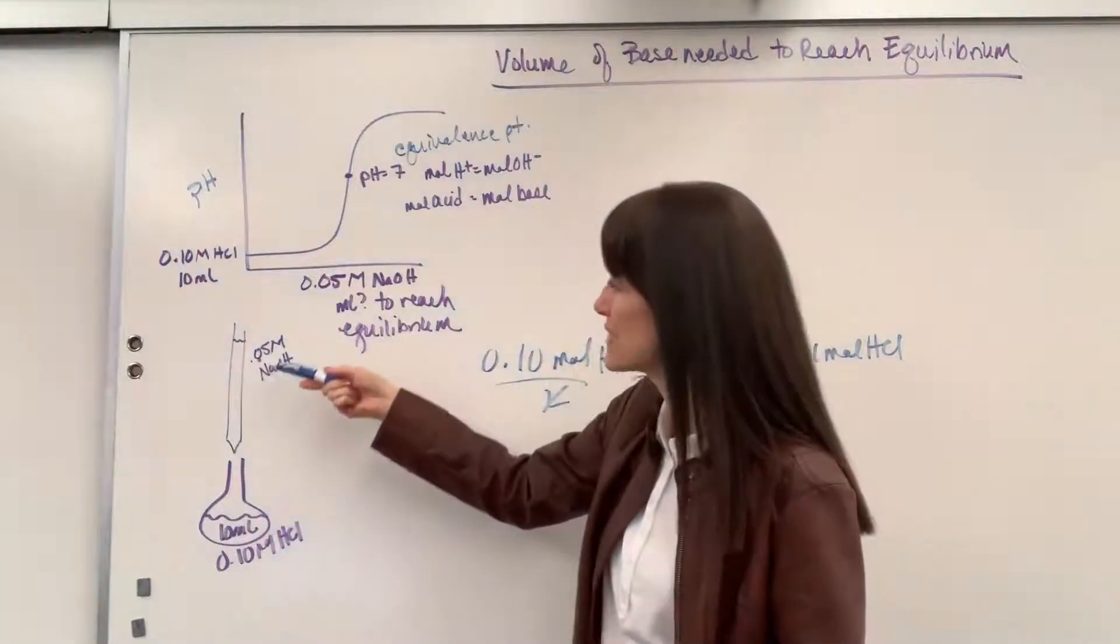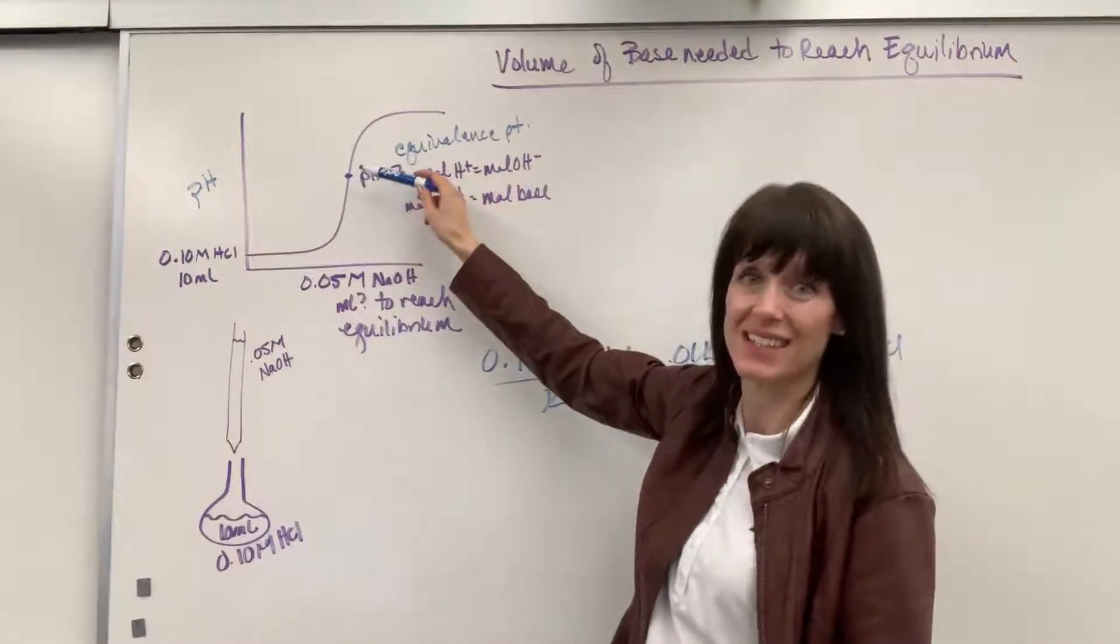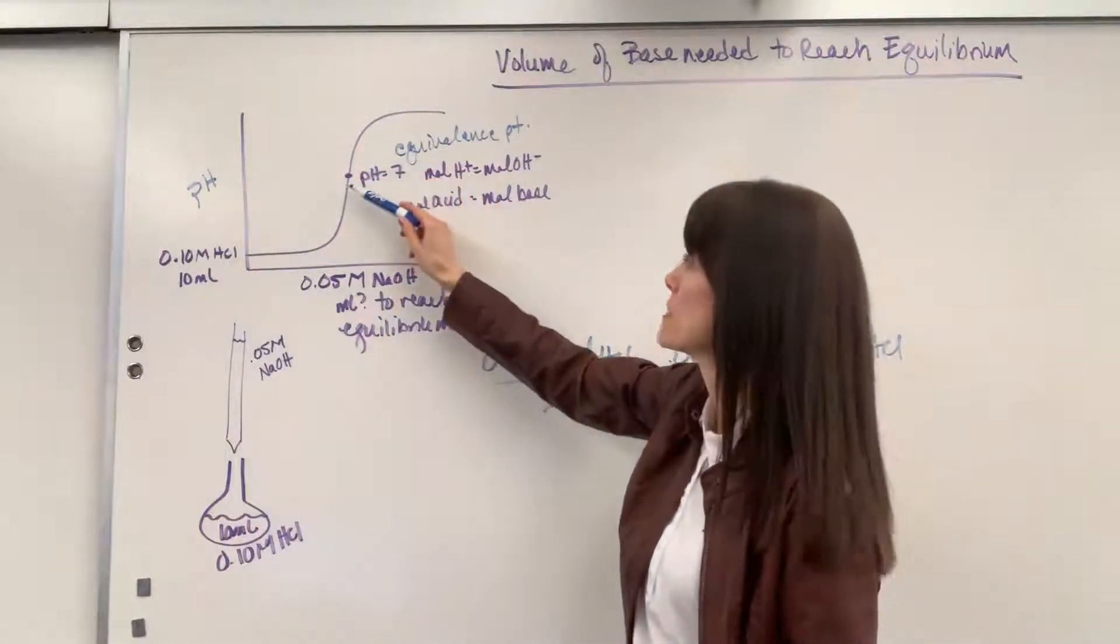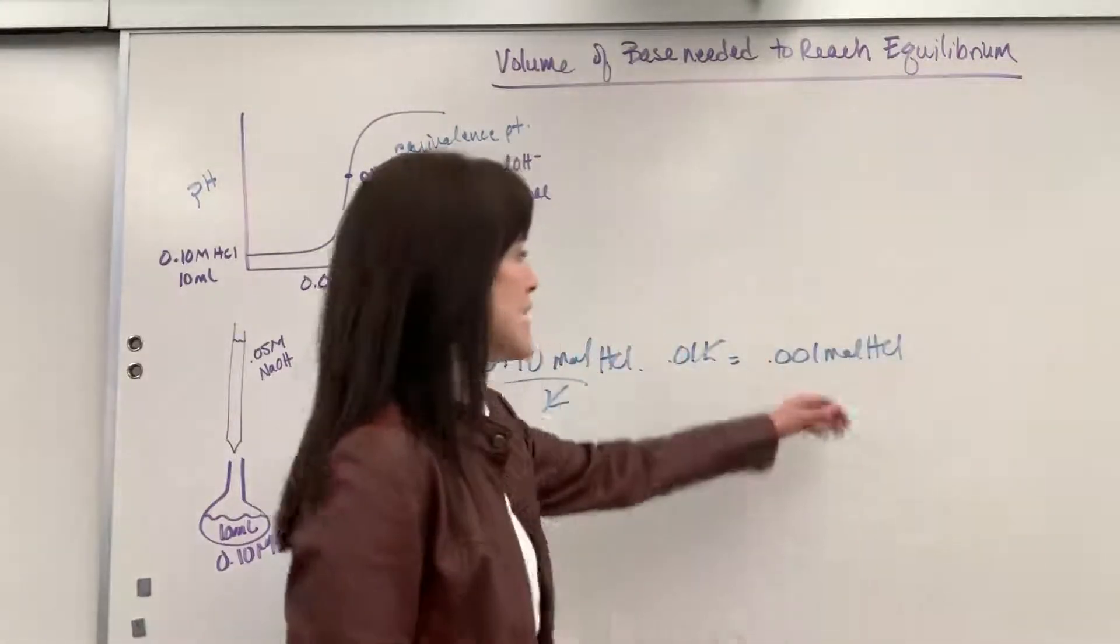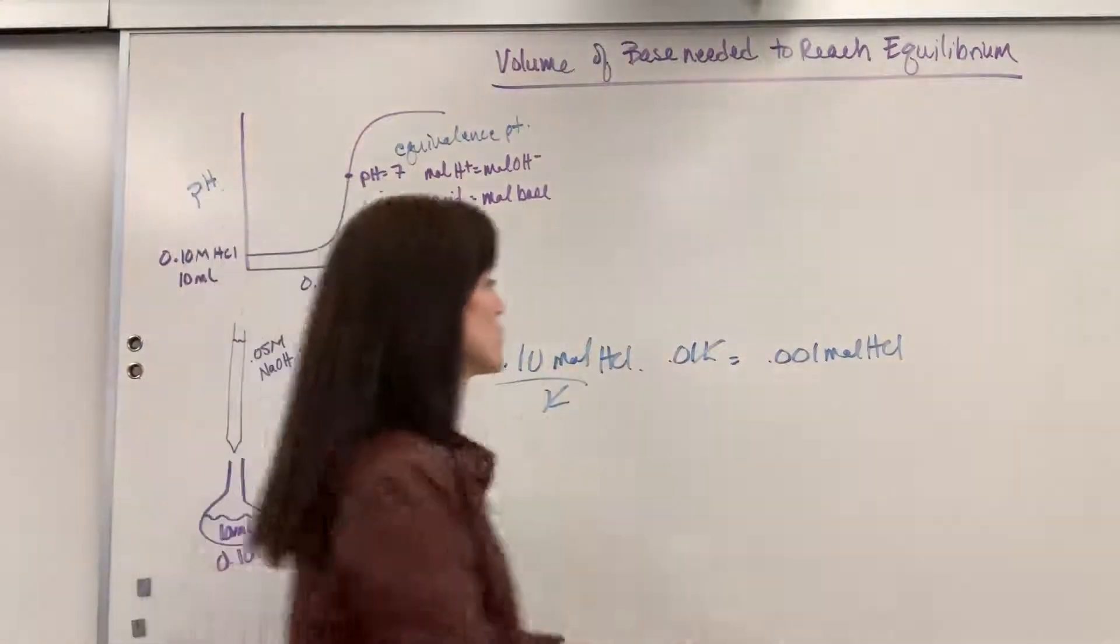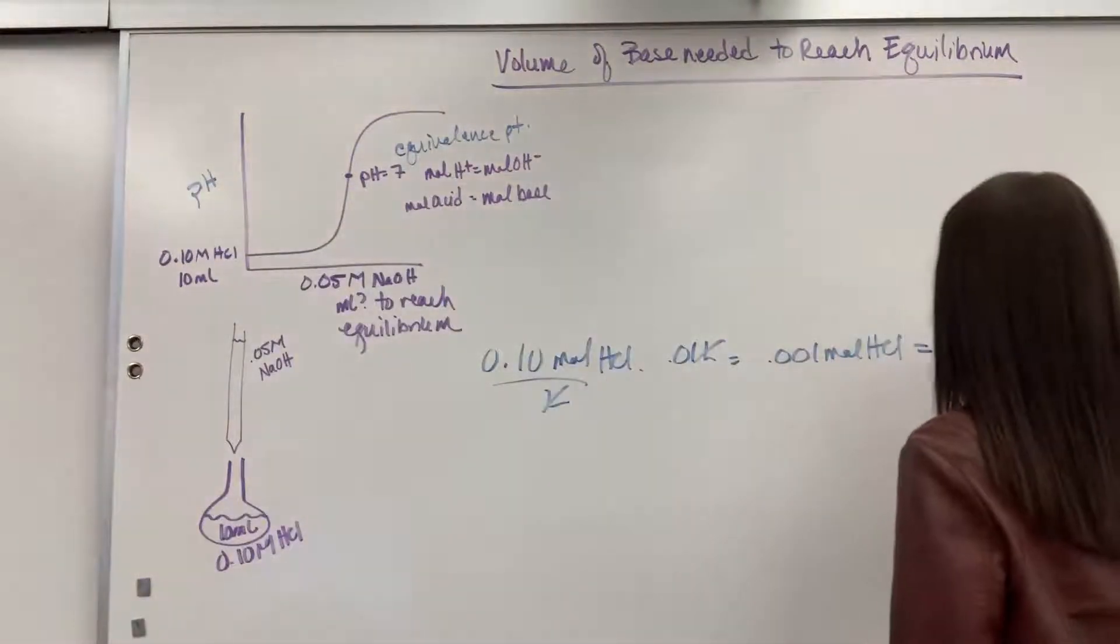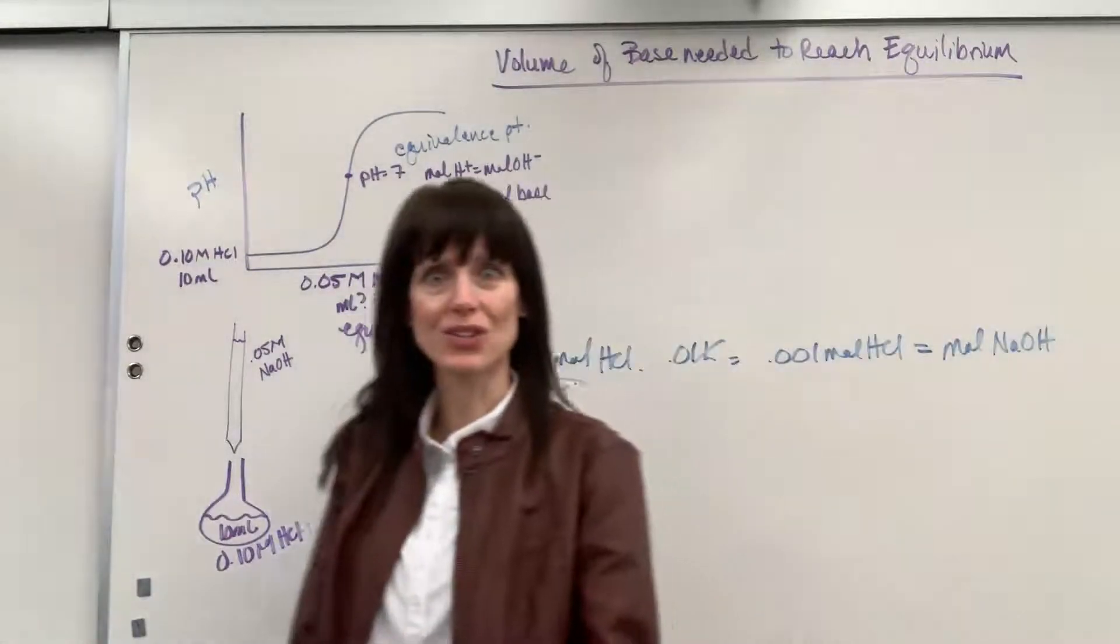So that's how many moles of HCl I have in here. Now, when I add exactly the same amount of moles of sodium hydroxide, that is the equilibrium. That's our special pH when moles of hydrogen equal moles of hydroxide. So yeah, I found the moles of HCl, but by definition, at equivalence point, that also equals the moles of the base of the NaOH. Awesome.